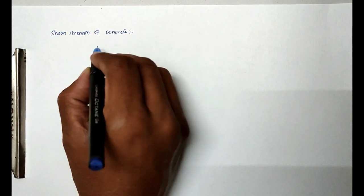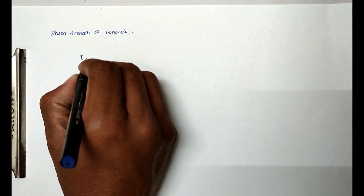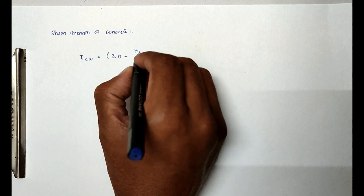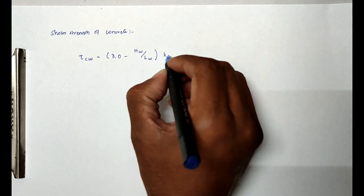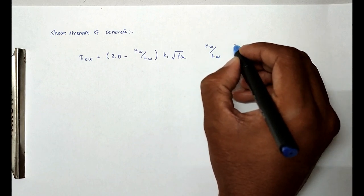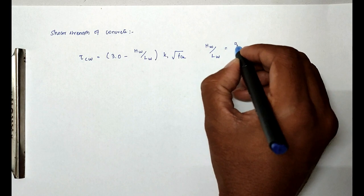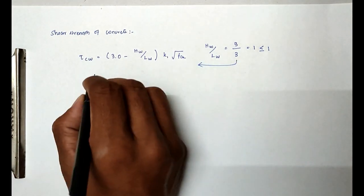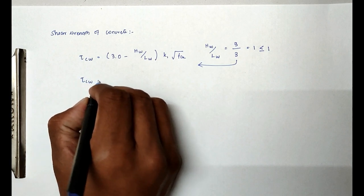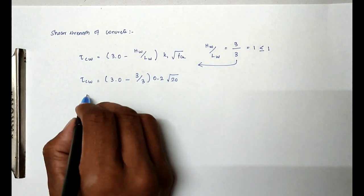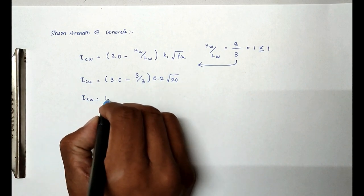Now calculating the shear strength of concrete for the wall: Tau_CW = (3.0 − HW/LW) × K1 × √FCK. We check HW/LW = 3/3 = 1, which is ≤ 1, so we can use this formula. Substituting: (3.0 − 3/3) × 0.2 × √20, giving Tau_CW = 1.79 N/mm². For that we can provide reinforcement.